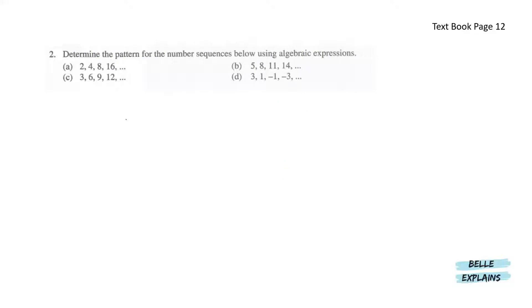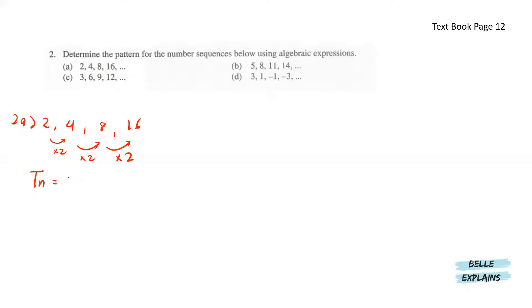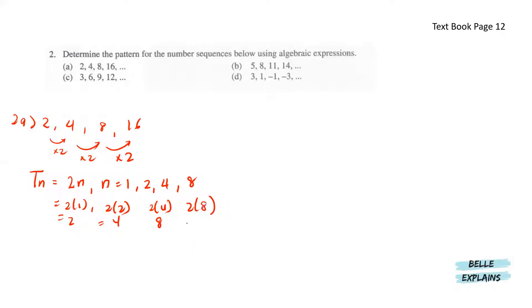Determine the pattern for the number sequences below using algebraic expressions. 2, 4, 8 and 16. Here we have 2 times 2 that will give us 4, 4 times 2 that will give us 8, 8 times 2 that will give us 16. Tn equals to 2n where n is 1, 2, 4 and 8. When n is 2 we have 4, when n is 4 we have 8, when n is 8 we have 16. So here we have 2, 4, 8 and 16.